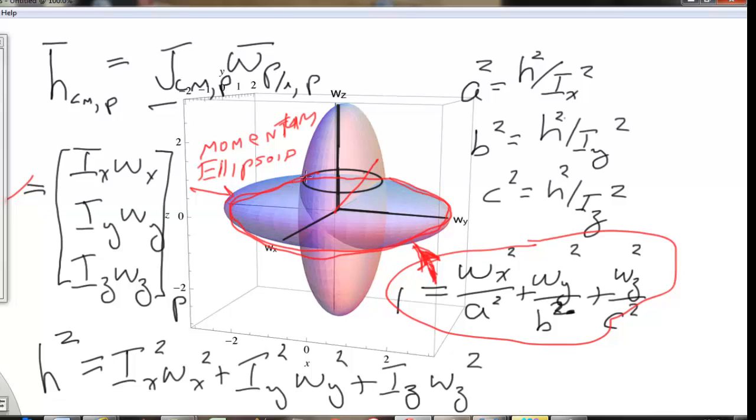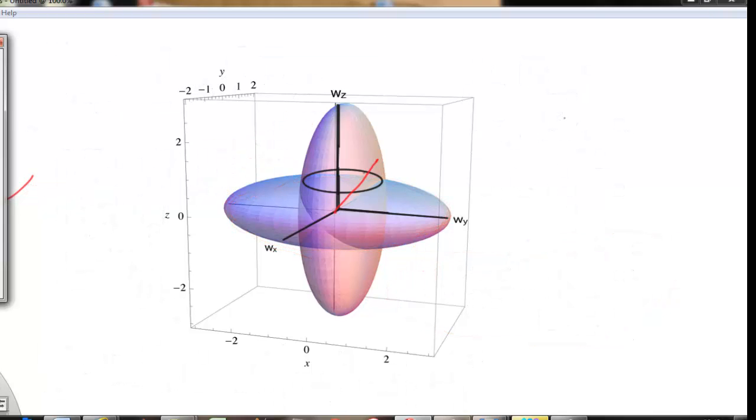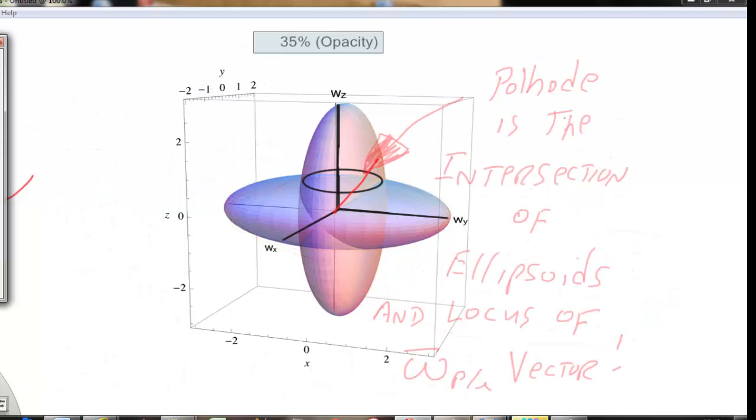Where they intersect, you will get what we call the polhode. The polhode is the intersection of the ellipsoid and the locus of the vector.